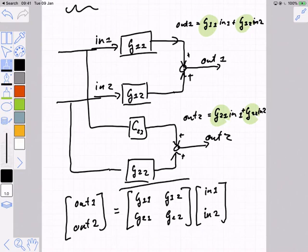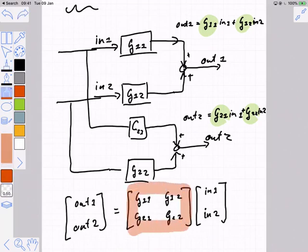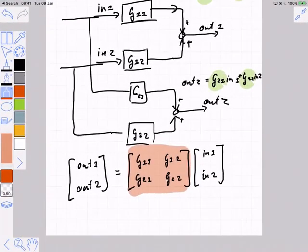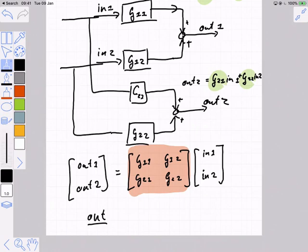And this new transfer function over here, or this new matrix over here, we can call that a transfer function, and we can actually call this out is equal to G times in.